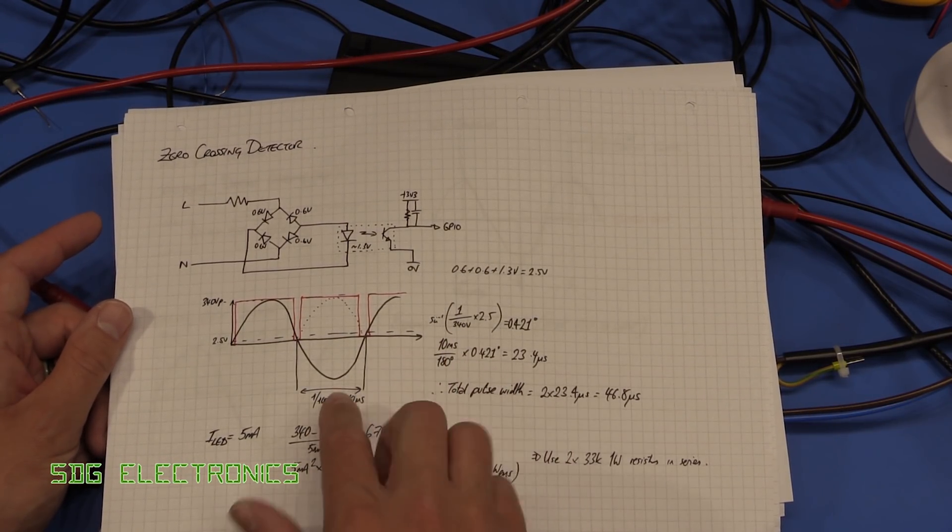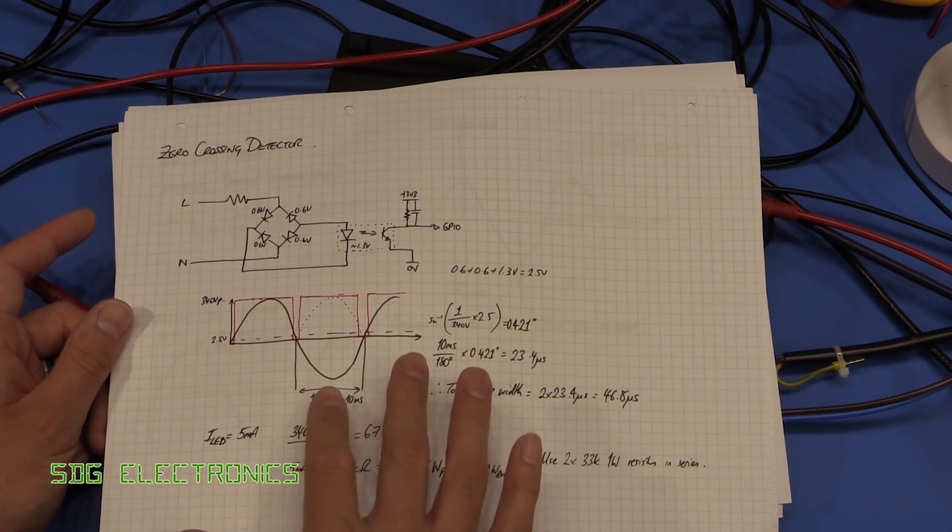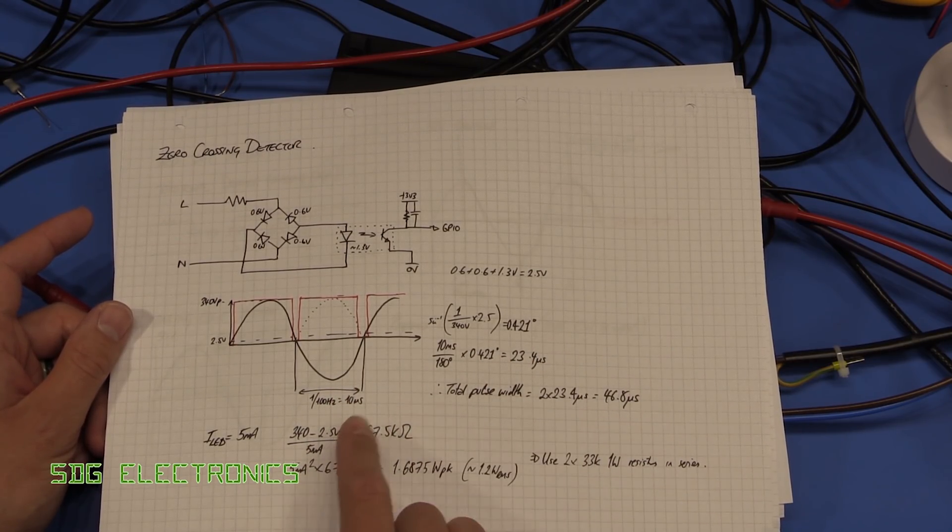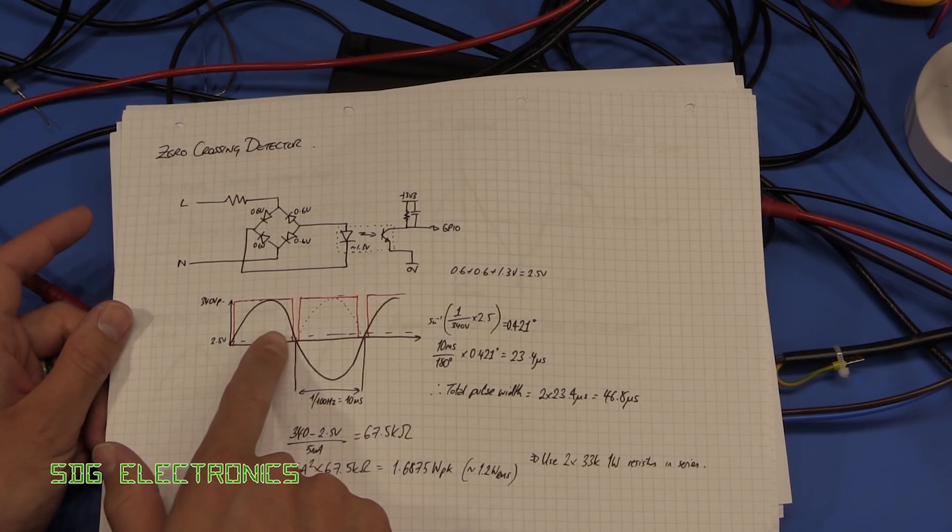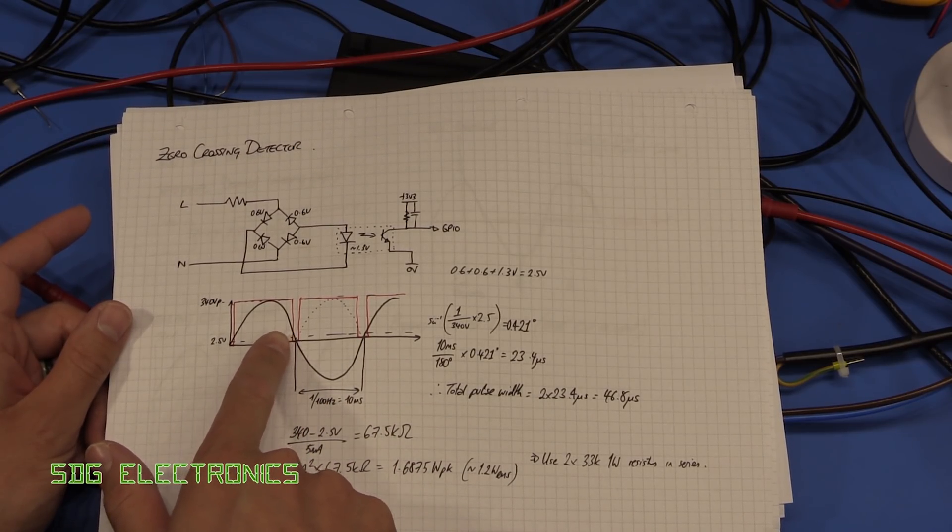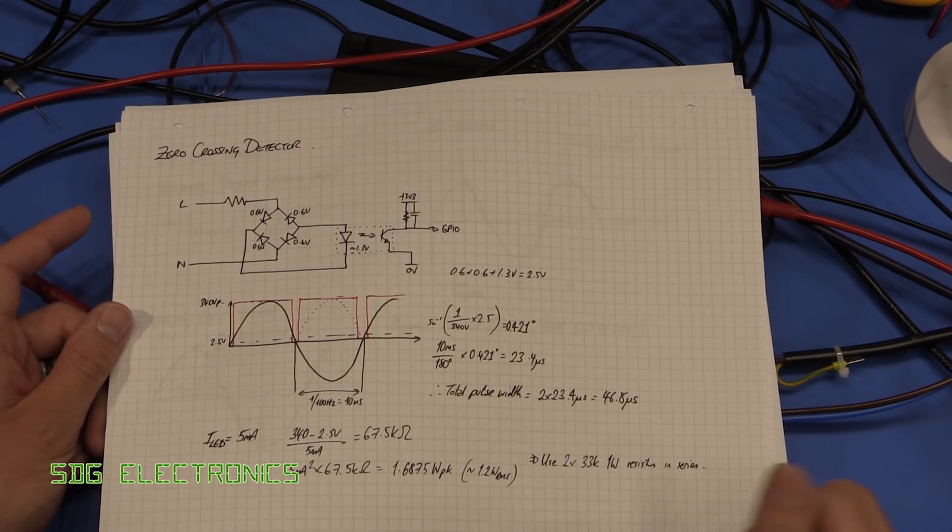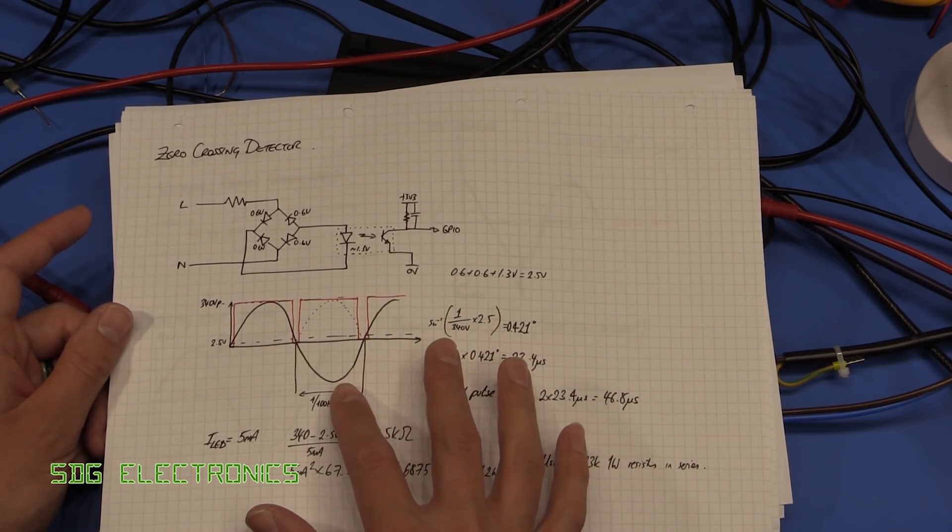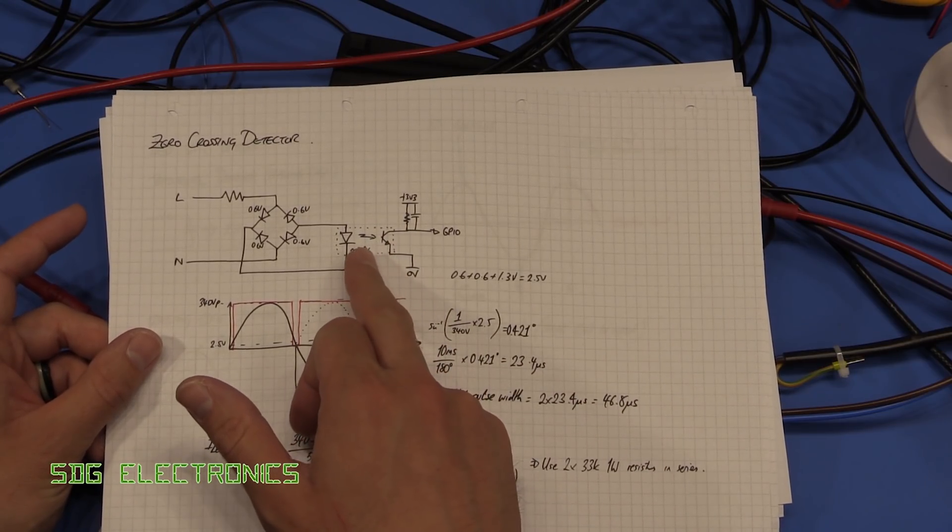So I did a little bit of analysis at the time on the zero crossing detector that I designed and basically what I'd worked out is that the time where it's actually turning on the LED fully is only going to be around 46 microseconds. But it actually turned out that that isn't the case and that's partially because this opto coupler,